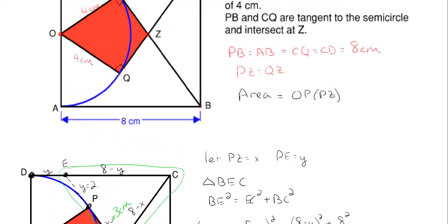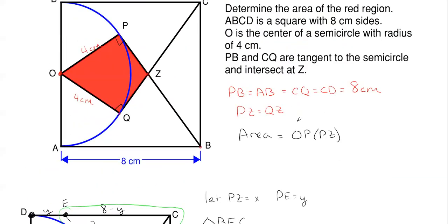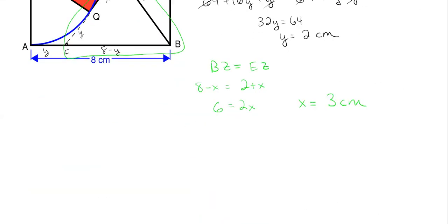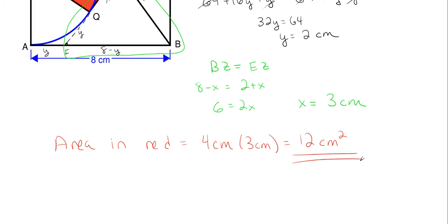PZ equals 3 centimeters. Scrolling back to the top, OP is 4 centimeters and PZ is 3 centimeters, so the overall area is just multiplying those two together. The area in red for that kite shape is 4 centimeters multiplied by 3 centimeters, which gives us a nice answer of 12 centimeters squared. I hope you enjoyed this video and learned a new math skill along the way. Please check out the other videos on our channel, like this video, leave a positive comment below, and subscribe.